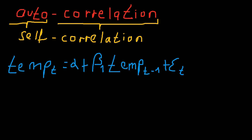Temperature at time T depends on the temperature one time interval before that. So if beta 1, if this coefficient over here, if beta 1 is actually significant, then we can talk about autocorrelation.